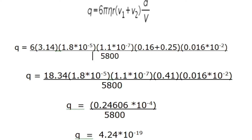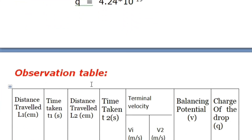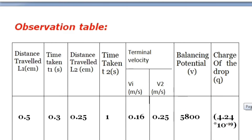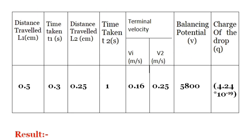This is our charge on the oil drop. You may get a different numerical value, but remember: the power of ten should always be 10⁻¹⁹. If you get a significantly different power, check your calculation again.